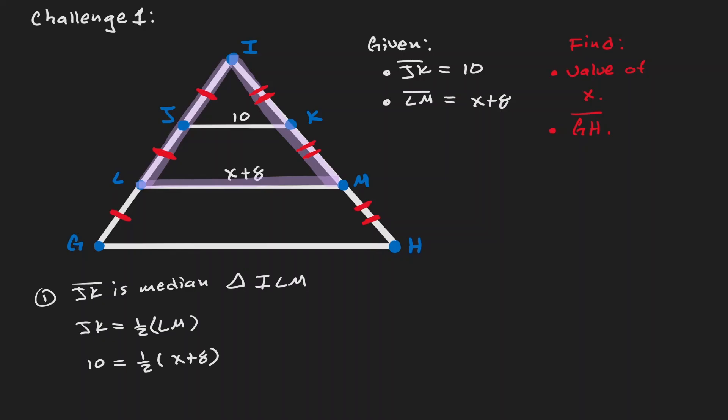And at this point, we can apply some algebra to solve for x. Let's continue by multiplying by 2. And let's subtract 8. So we have found the first objective.